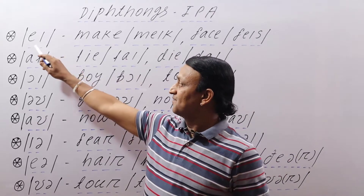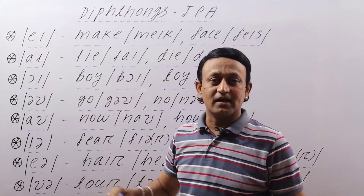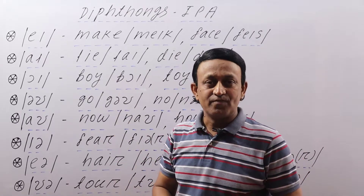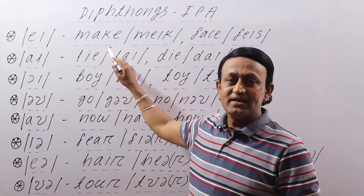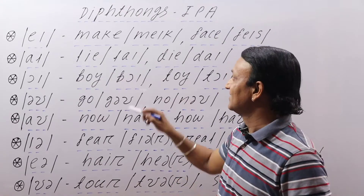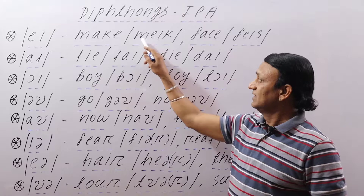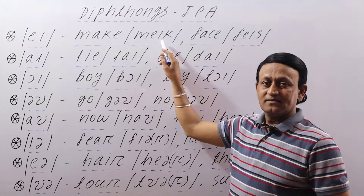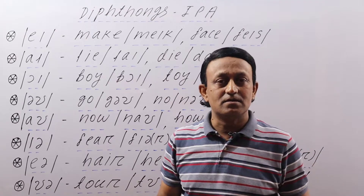The first sound is /eɪ/. This is the /eɪ/ sound — a long A sound and a short E sound. Together the sound becomes /eɪ/, and you can hear this sound in words like 'make'. The spelling is M-A-K-E, and we have the /eɪ/ sound in this first diphthong: M, then the /eɪ/ sound, then K — together it makes 'make'.